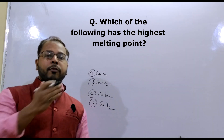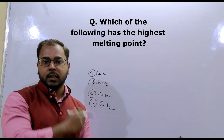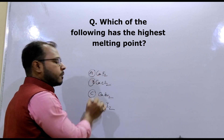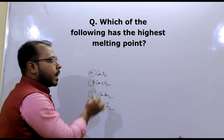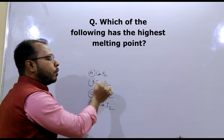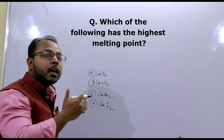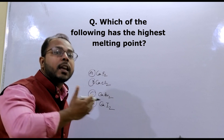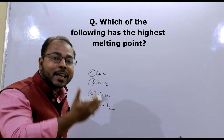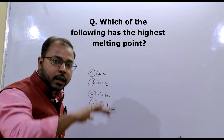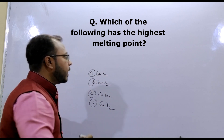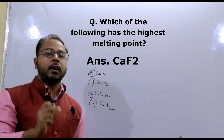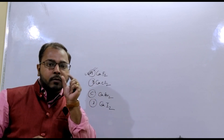If you follow my video related to Fajan's rule, I have already discussed that if a cation is fixed, as the anionic nucleus increases, that means ionic potential increases, covalent nature increases, and their melting point and stability would be decreased. That is why calcium fluoride (CaF2) should have the highest melting point, because its anionic nucleus is very small.